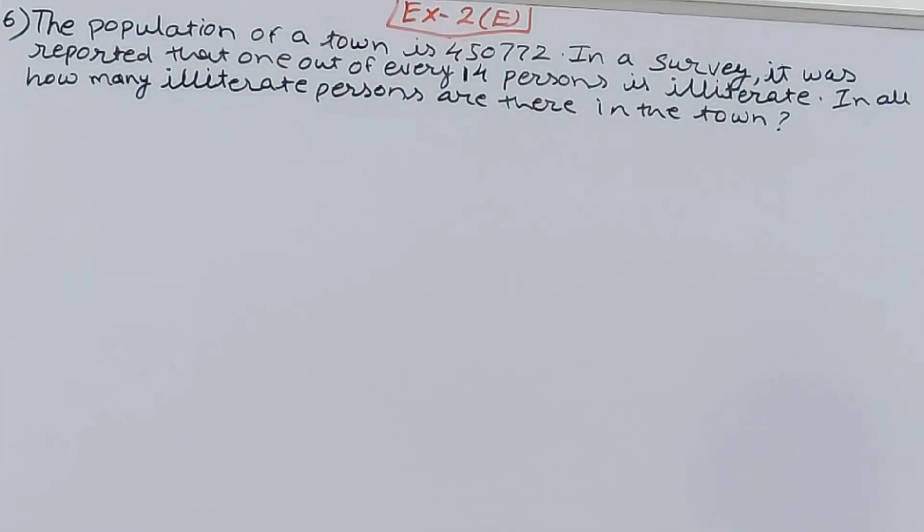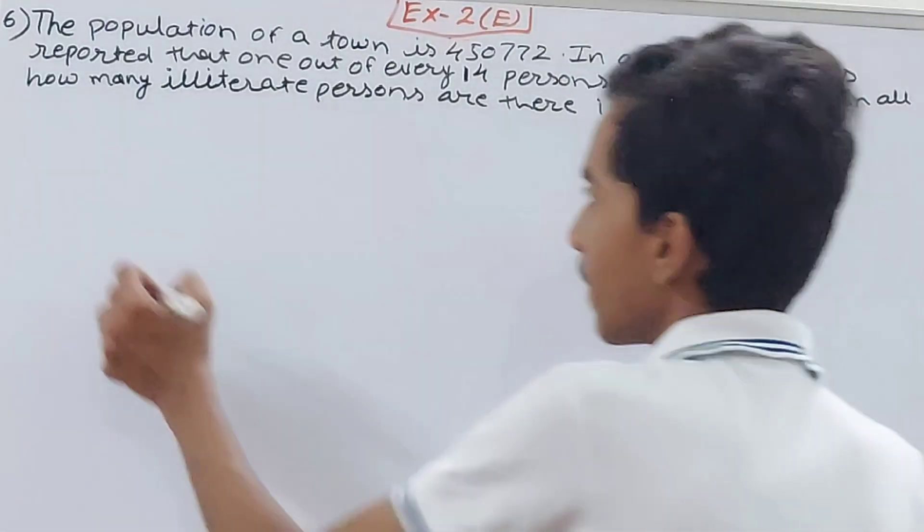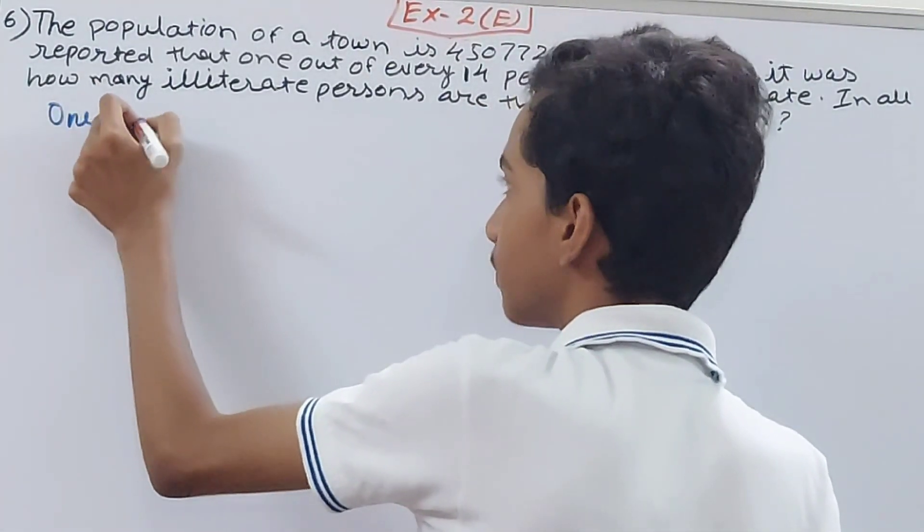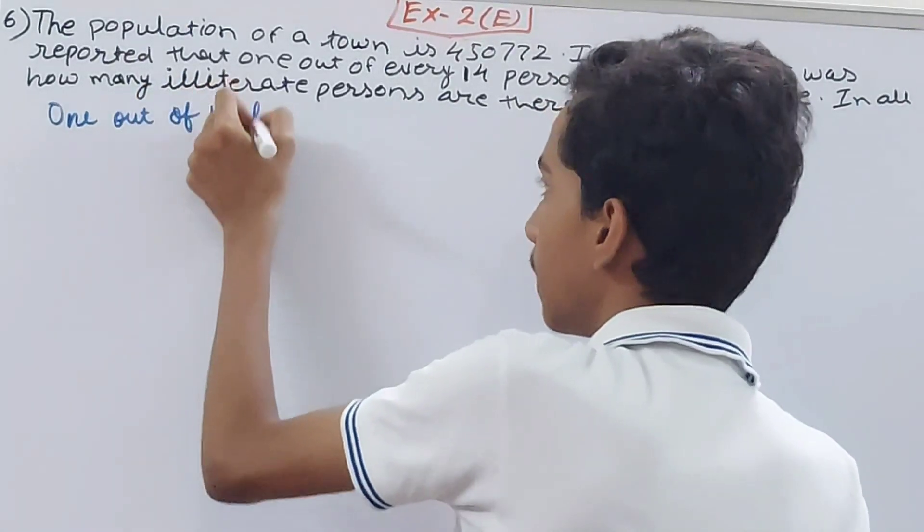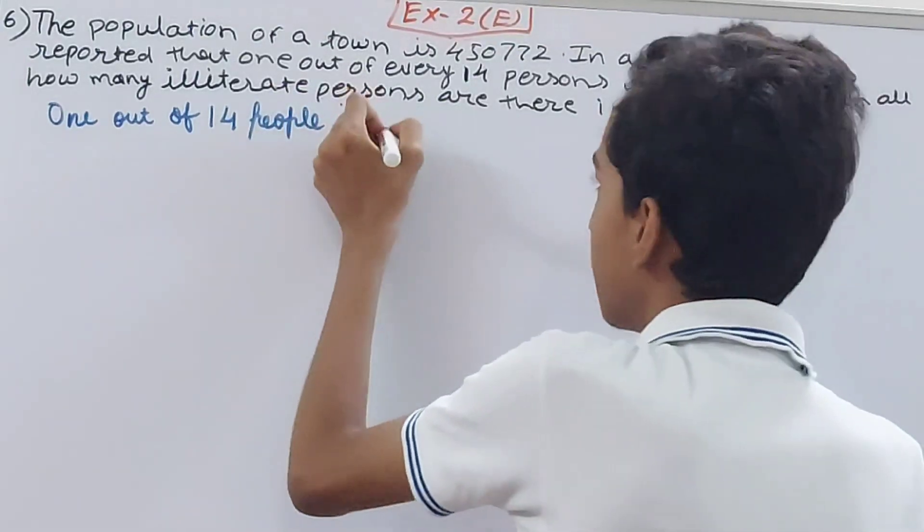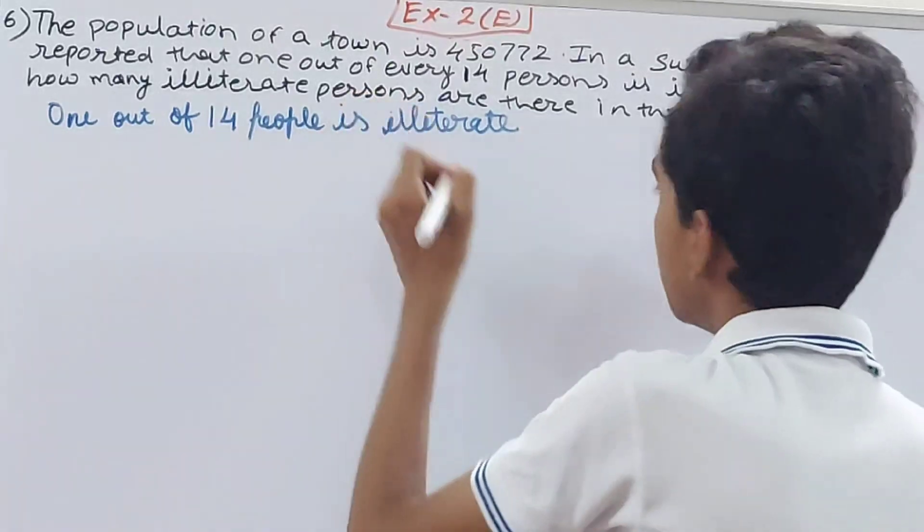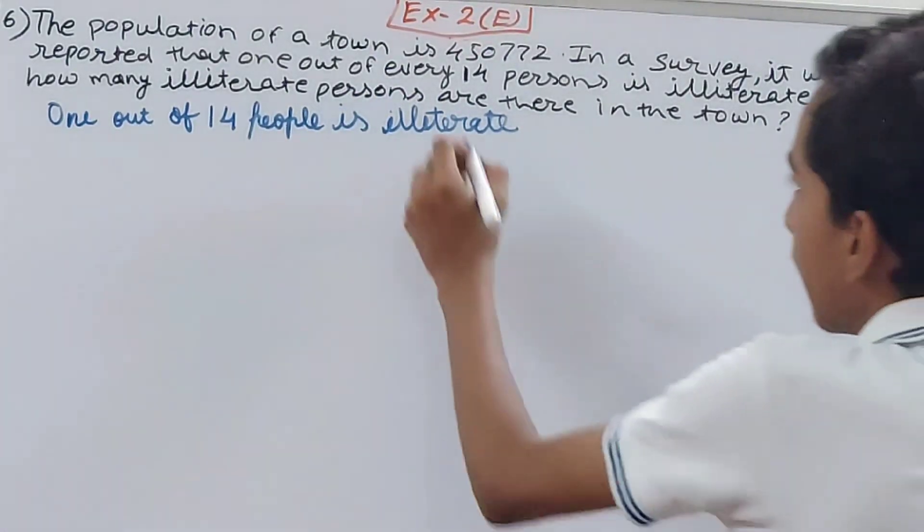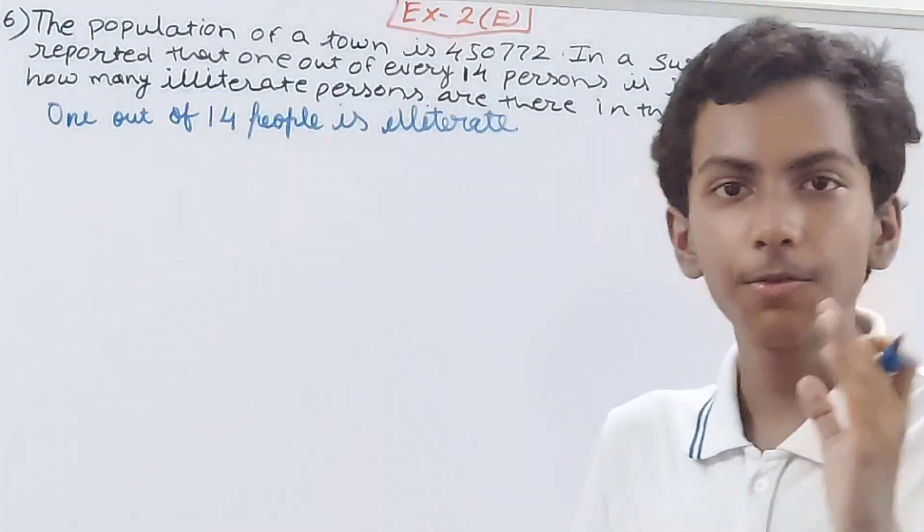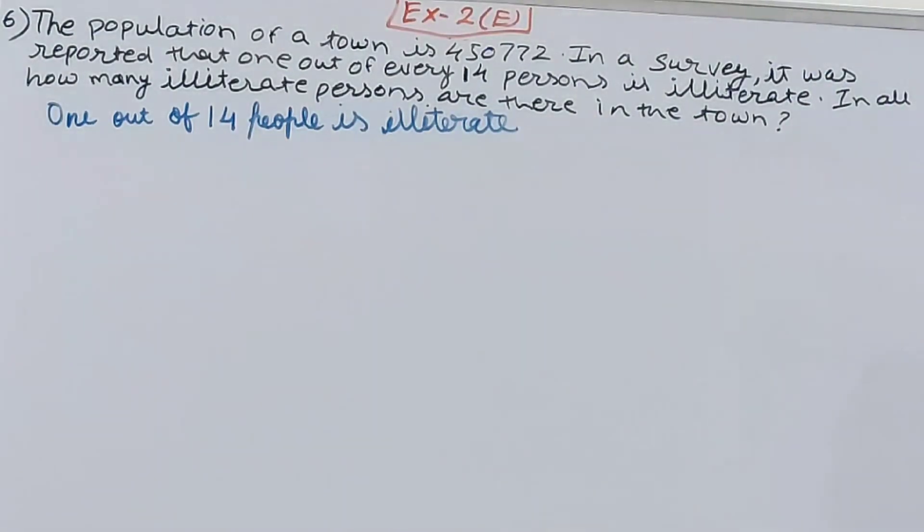In all, how many illiterate persons are there in the town? Right, so what it says here: one out of fourteen people is illiterate. This is the condition that is given. Illiterate is a person who is not able to read and write. Now it says that one out of every fourteen persons is illiterate in four lakh fifty thousand seven hundred seventy-two population. How many people are illiterate?